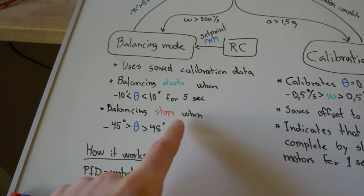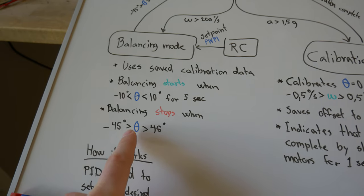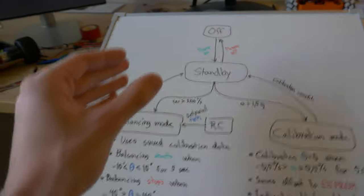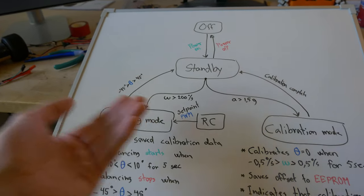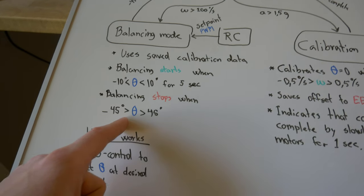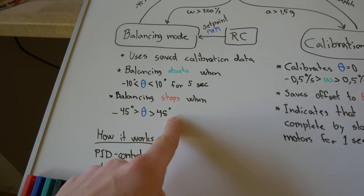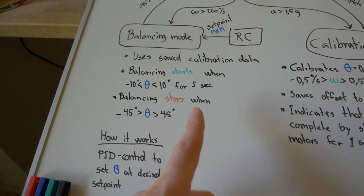That means when you have activated the balancing, you basically just need to put it upright and then it's going to start balancing after five seconds. The balancing stops when the angle is below 45 degrees or above 45 degrees.